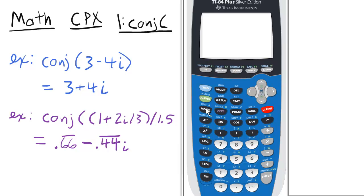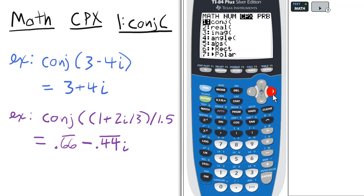To find the conjugate, access the math menu, and from there scroll over twice to complex and select the first option, which is conjugate.